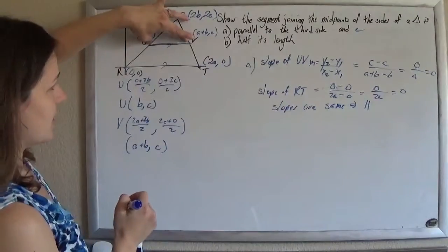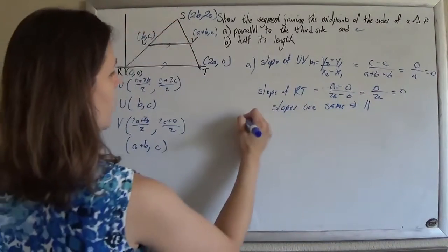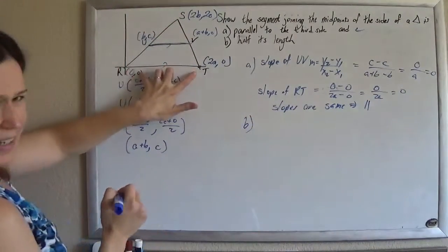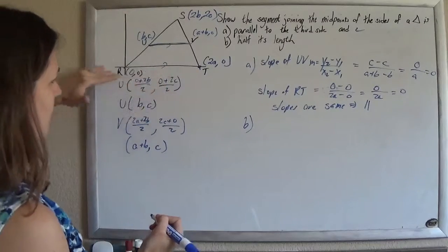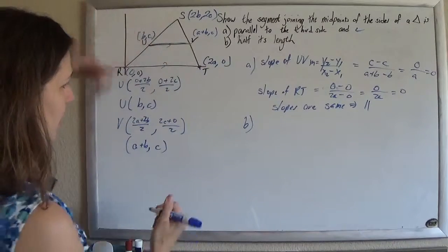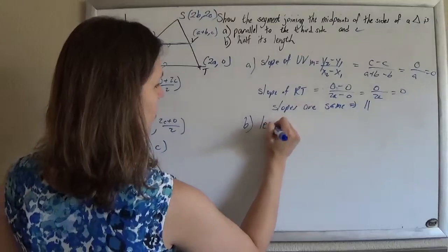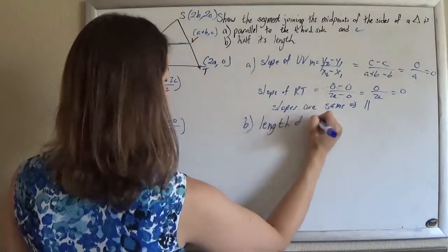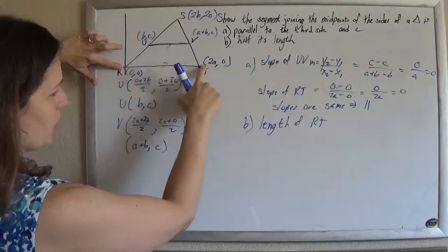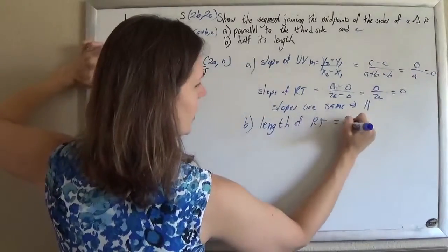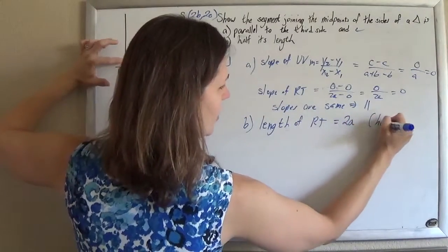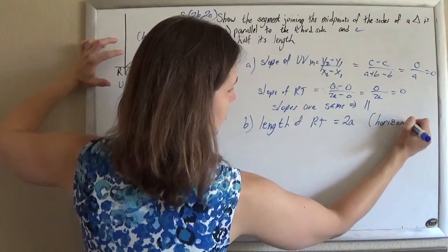And then we need to show that this length is half that length. Well, these aren't so bad to find because they're just straight horizontal lines. So we can tell really quickly that the length of rt goes from 0 to 2a, so that's just 2a.